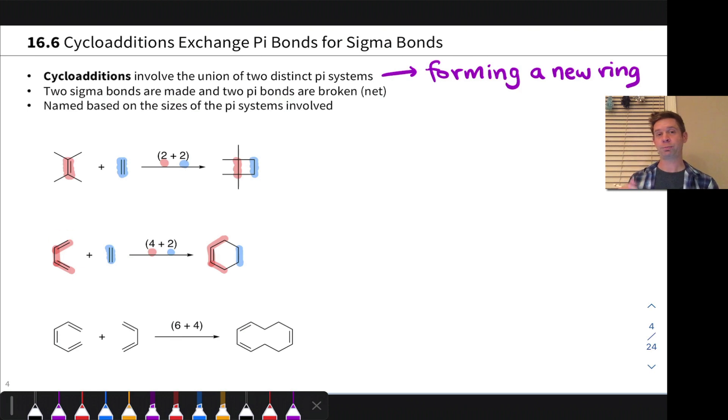Finally, we have an example of a six plus four cycloaddition where a hexatriene gets together with butadiene and we end up with a ten-membered ring now where, again, the two new bonds are between the termini or the ends of the pi system and we've lost two pi bonds, one from the six-atom component and one from the four-atom component.